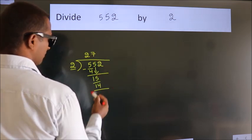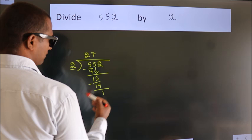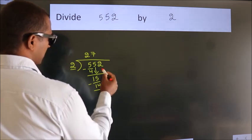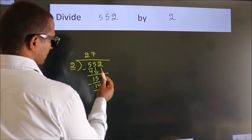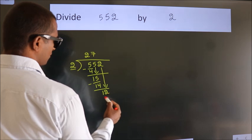Now we subtract. We get 1. After this, bring down the next number. So 2 down, making 12.